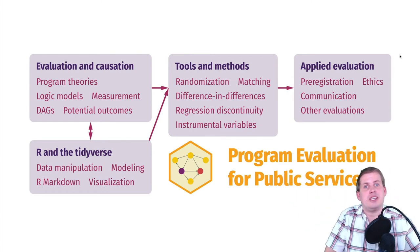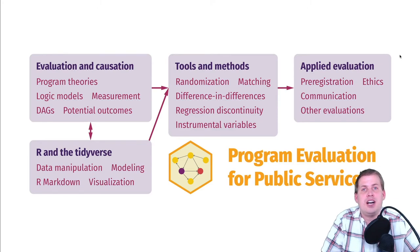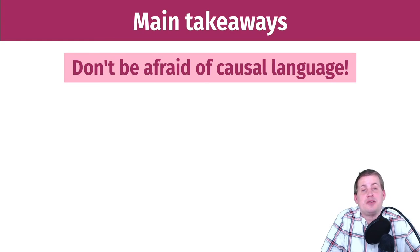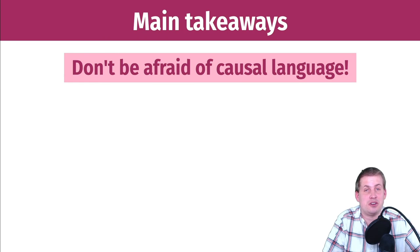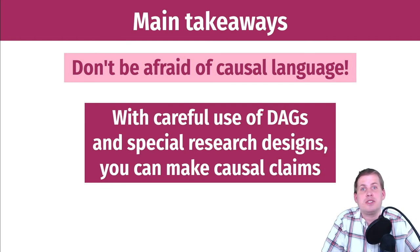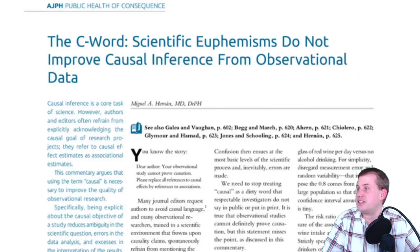The main takeaways of this class: mostly, don't be afraid of causal language. If there's anything you remember, it's that you've been scared away from causation in your past stats classes — you've always been told just say correlation, never say causation. The moral of this class is you can do that if you use DAGs carefully or if you use careful research designs with design-based models. You can make causal claims, and that's why I had you read that fun article about the c-word.